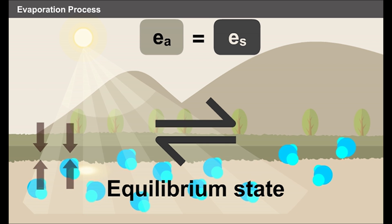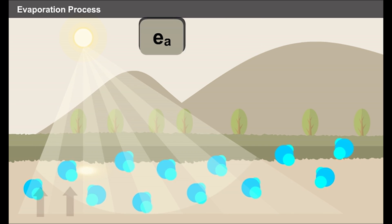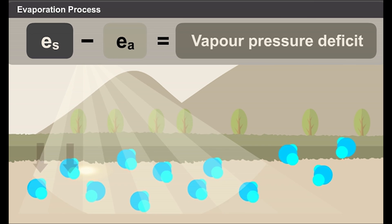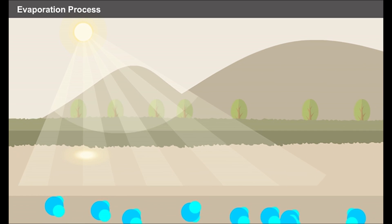However, this state never happens in nature. But there is always a difference in the vapour pressures of air and water in the atmosphere. This difference is called the vapour pressure deficit. As long as the wind blows continuously, the accumulated water molecules are carried away, creating a vapour pressure deficit and thus accelerating the evaporation process.